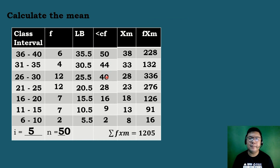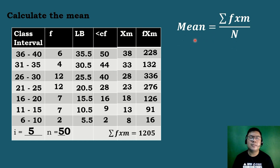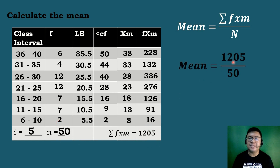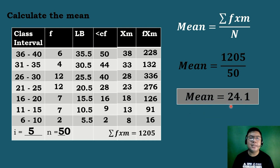Now let's calculate the mean for the grouped data using the formula: mean = Σ(f × m) / n. We divide 1205 by 50, so mean = 24.1. Therefore, the average score of the 50 students of G-10 Pythagoras in the math test is 24.1.